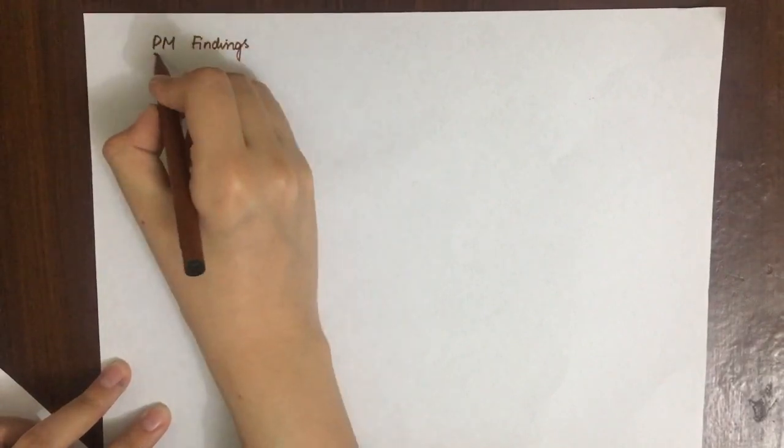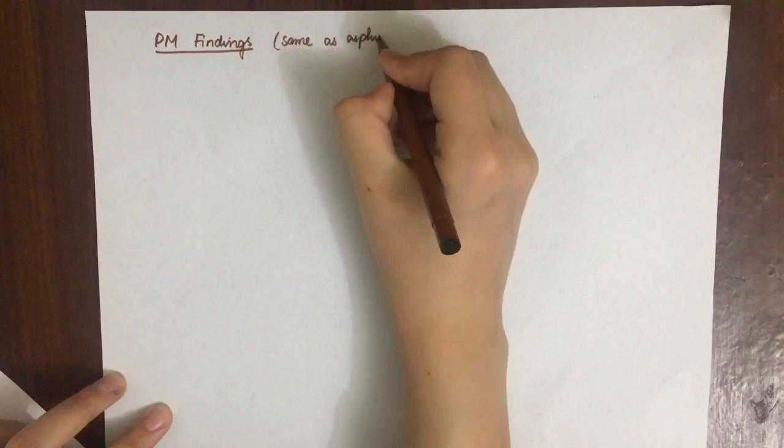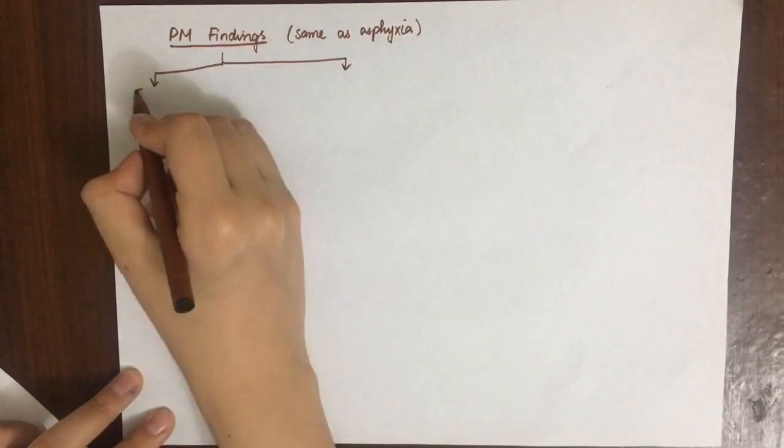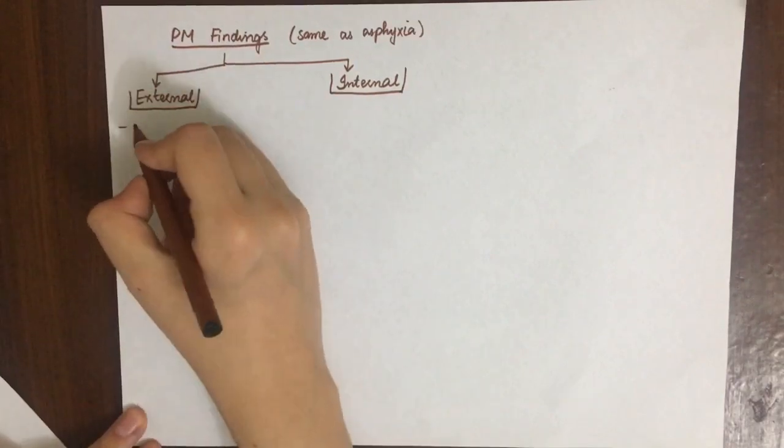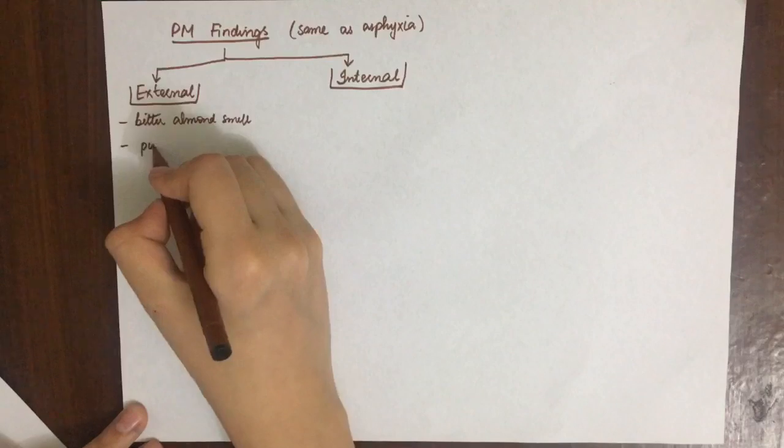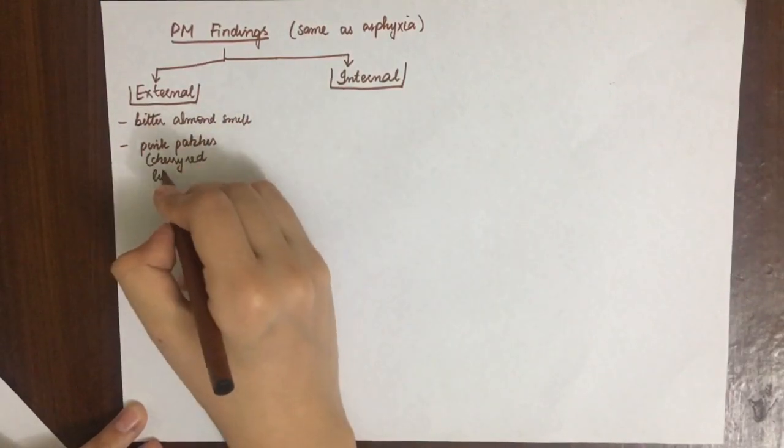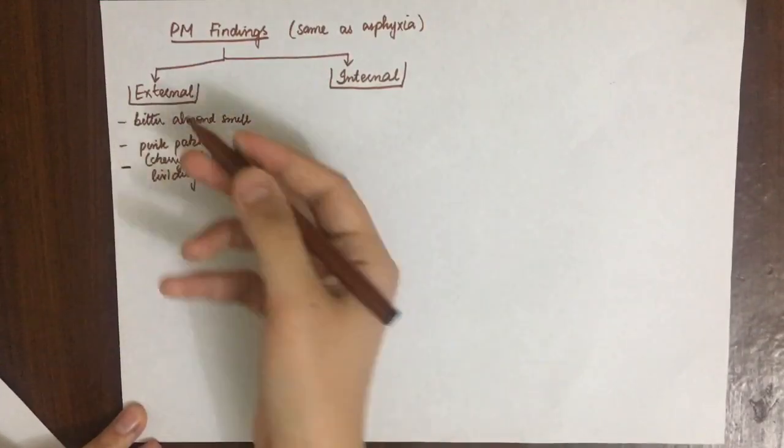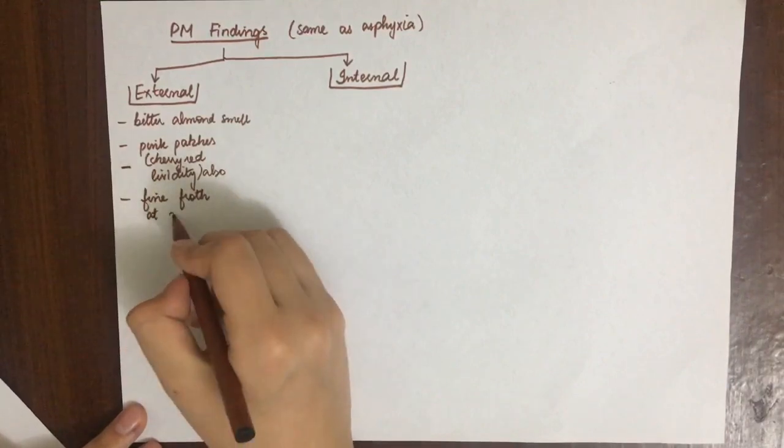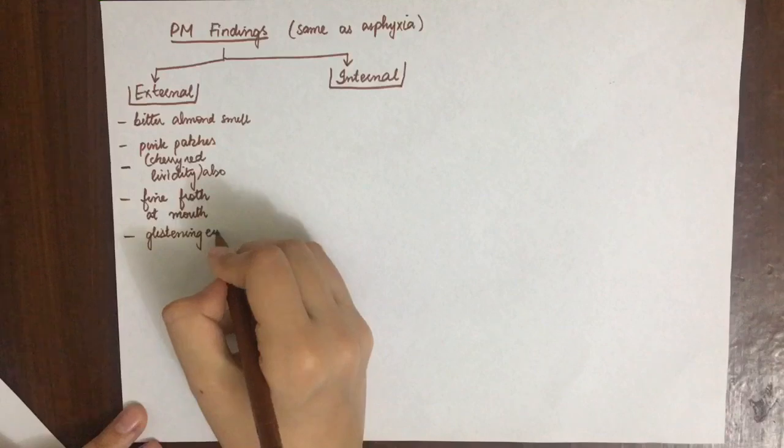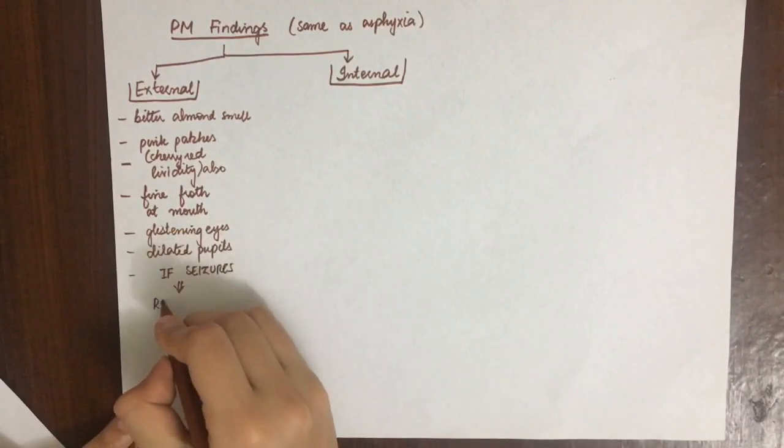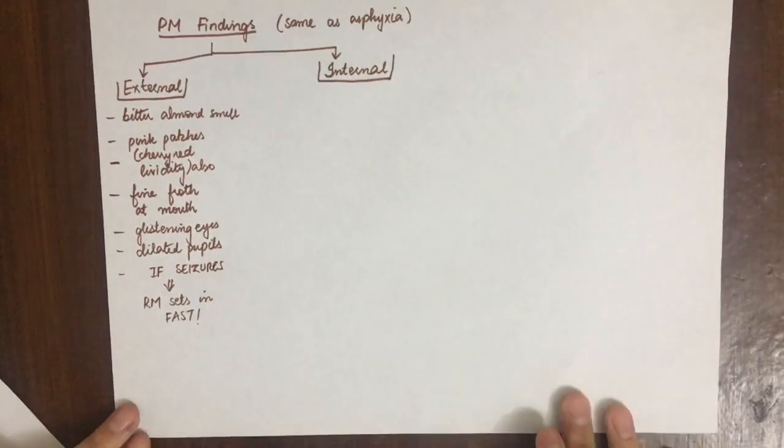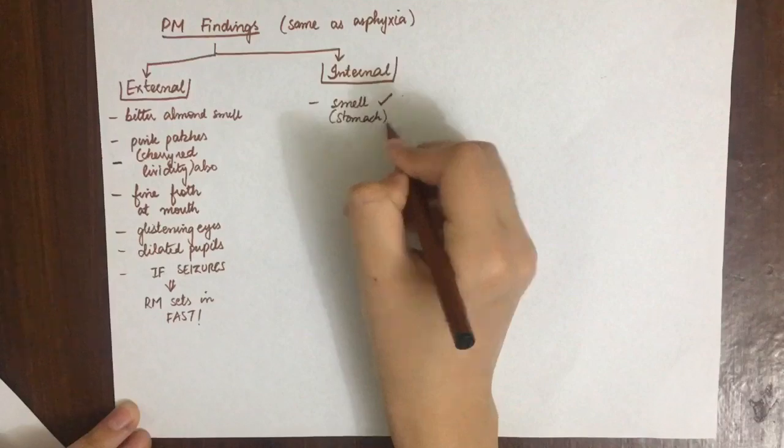Let's see the post-mortem appearances. The post-mortem appearance is the same as asphyxia, as death is due to respiratory paralysis. There are two different findings: external and internal. Bitter almond smell can be recognized. There are pink patches on the face and lips. There is cherry red lividity. Fine froth can be seen at the angles of the mouth. The eyes are glistening and pupils are dilated. If death occurs due to seizures, then rigor mortis will set in very early.